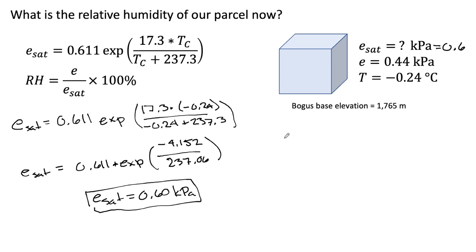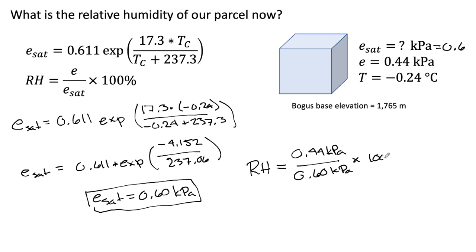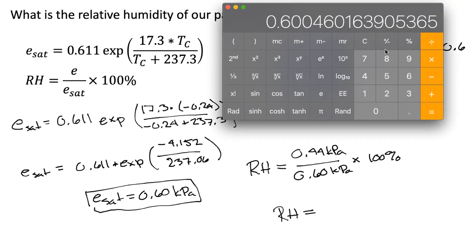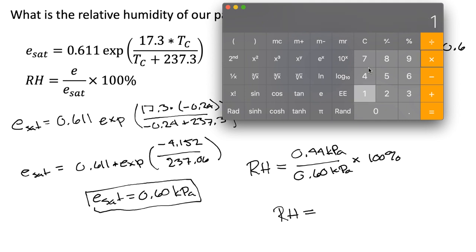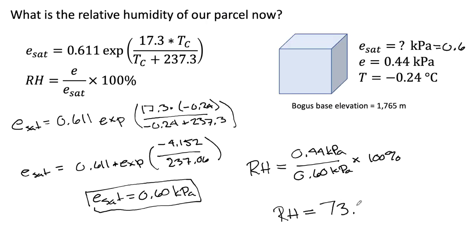Now we know ESAT is 0.60 kPa. The relative humidity equals E divided by ESAT times 100%. Our actual vapor pressure E is 0.44 kPa, and ESAT is 0.60 kPa. So 0.44 divided by 0.60 times 100% gives a relative humidity of about 73%.